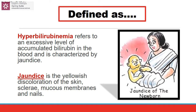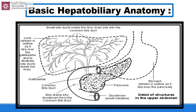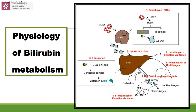Before discussing the pathology, let us discuss the basic anatomy and physiology of the hepatobiliary system. The hepatobiliary system consists of the liver, gallbladder, and multiple bile ducts which drain bile into the common bile duct. From the common bile duct and cystic duct, the bile finally drains into the duodenum.